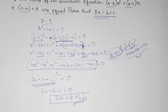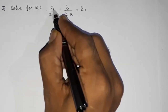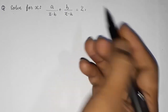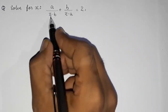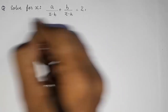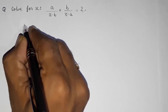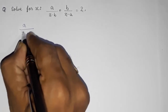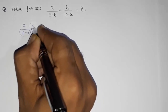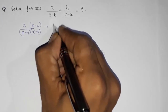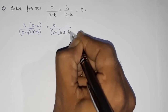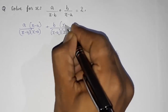Moving to the next question: solve for x — a upon (x minus b) plus b upon (x minus a) equals 2. We don't have any shortcut here, so we directly find the LCM and convert it to standard form. The LCM is (x minus b)(x minus a), so we multiply accordingly on both numerators.